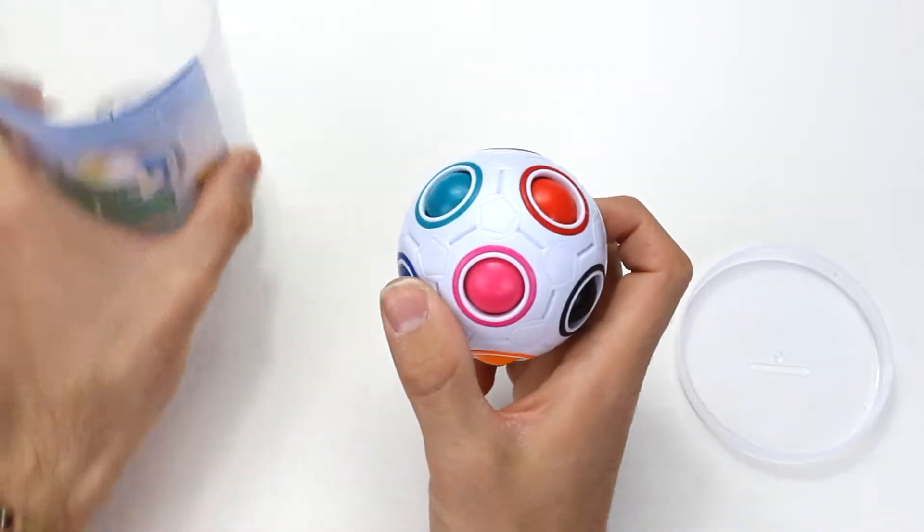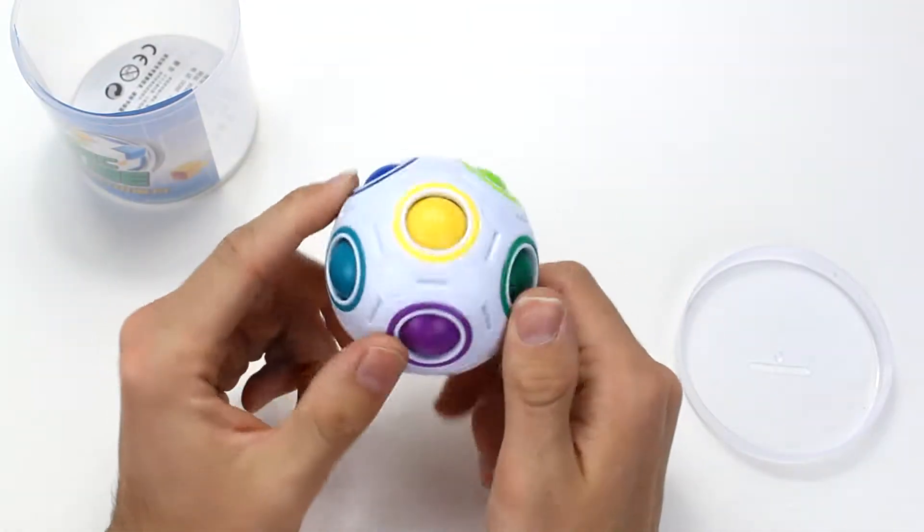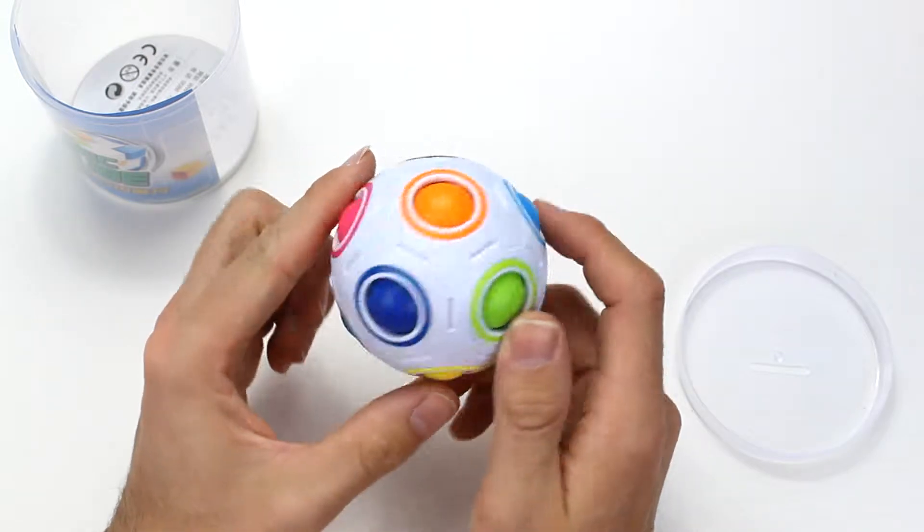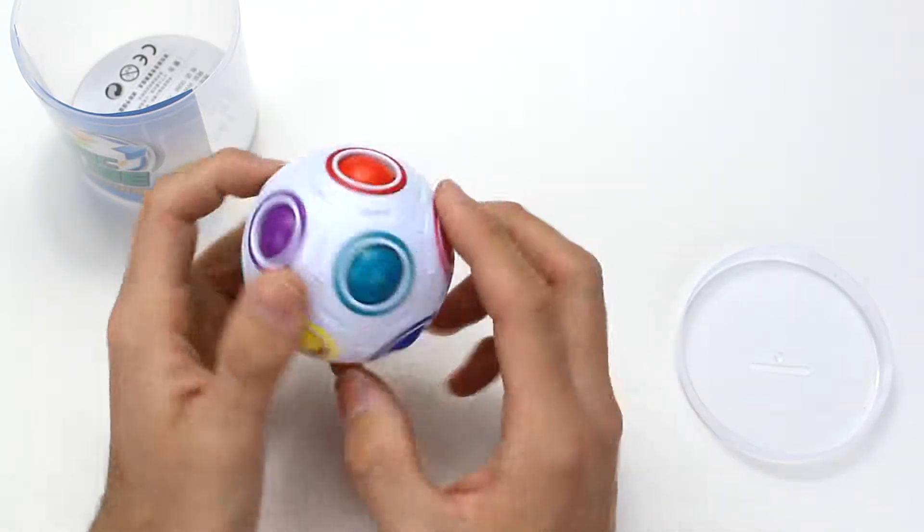How does it work? This is the Yongjung Rainbow Ball. As you can see, we've got a lot of different colored balls.